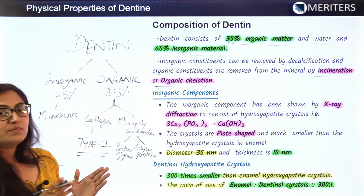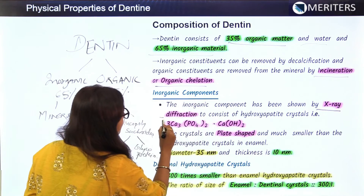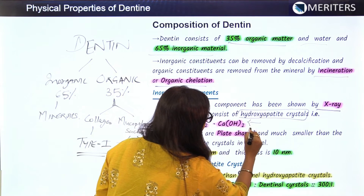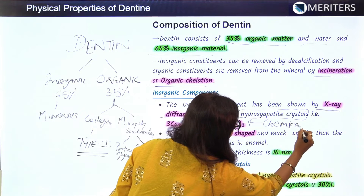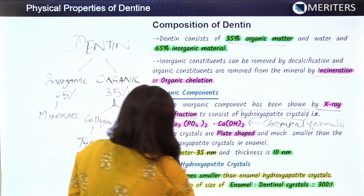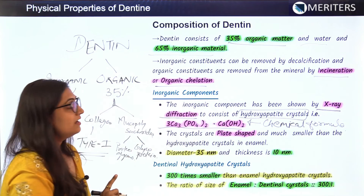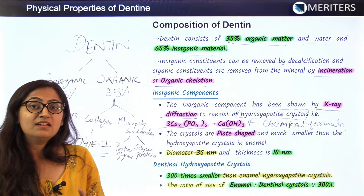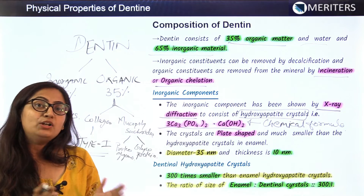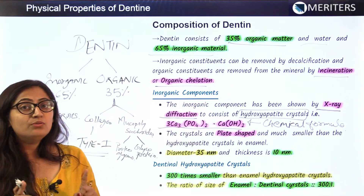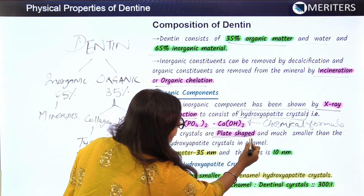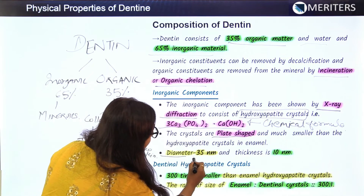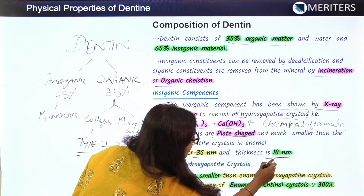The inorganic components have been identified by the X-ray diffraction method, which shows they are made up of hydroxyapatite crystals. An important point: the hydroxyapatite crystals of dentine are poor in calcium content compared to enamel, and richer in carbon content compared to enamel. The crystals are plate-shaped, much smaller than enamel crystals, with a diameter of 35 nanometers and thickness of 3 to 10 nanometers.